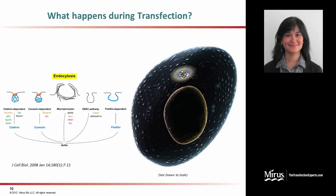These endosomes then go through a variety of endocytic pathways and the transfection complex finally lands up in the really low pH environment of the endolysosomes. For effective functionality, however, the transfection complex and also the nucleic acid needs to escape this low pH environment and gets released into the cytoplasm.